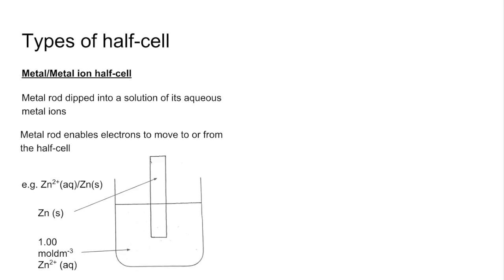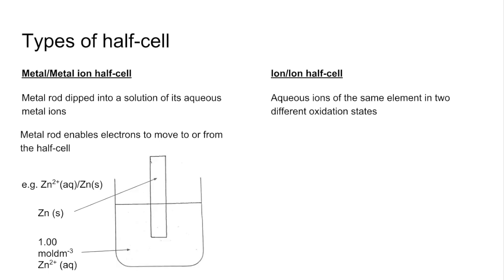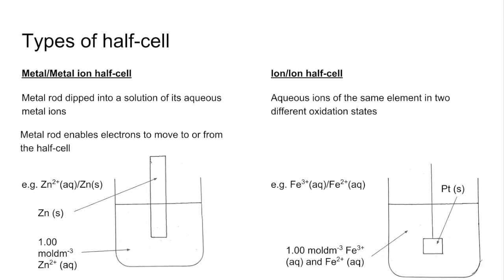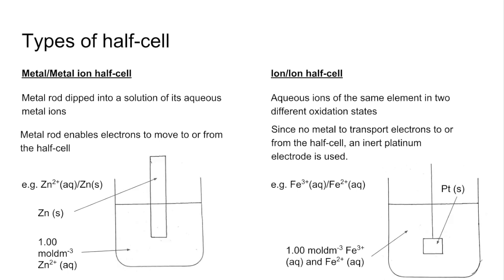The purpose of the metal rod is to enable electrons to move to or from the half cell. The second type is the ion/ion half cell, which has aqueous ions of the same element in two different oxidation states. The example is the Fe³⁺/Fe²⁺ half cell. We don't use an iron rod here because that would give three oxidation states of iron (0, +3, +2). Instead, a platinum electrode allows the transport of electrons to or from the half cell.